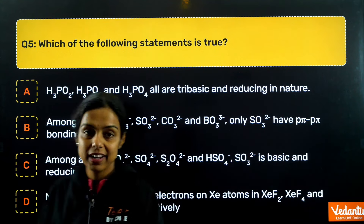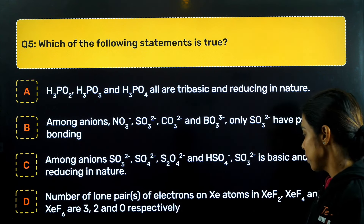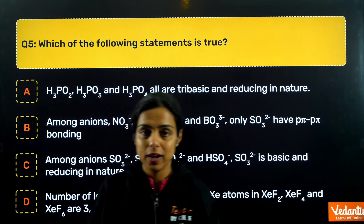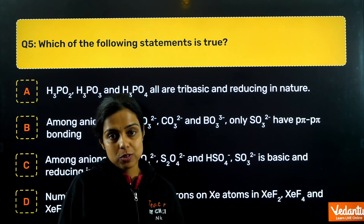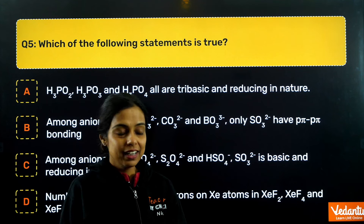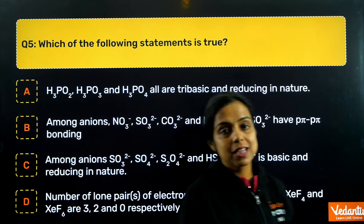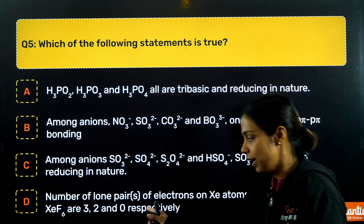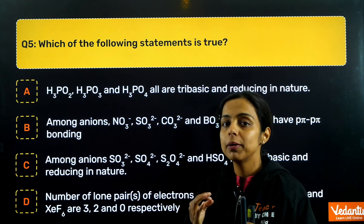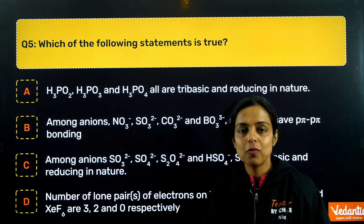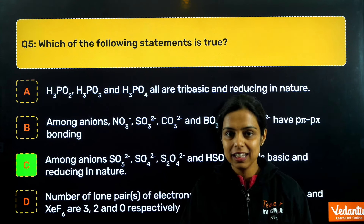Statement D: number of lone pairs on xenon in XeF₂ is 3, in XeF₄ is 2, and in XeF₆ is 1. For XeF₆, xenon has 8 valence electrons — 6 form bonds with fluorine, leaving 1 lone pair. The statement says XeF₆ has 1 lone pair — wait, actually checking D says values 3, 2, 1 but the given order is incorrect per the question. XeF₂ = 3 lone pairs, XeF₄ = 2 lone pairs, XeF₆ = 1 lone pair — that is correct, so D is incorrect as stated. The true statement is C; mark answer C.